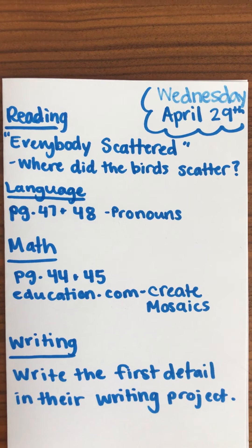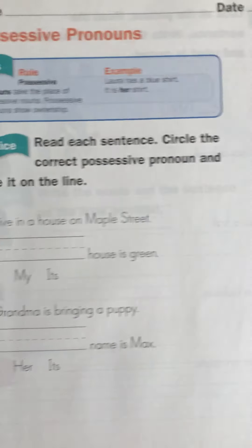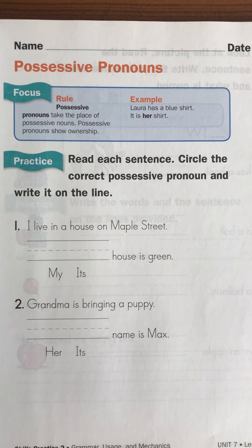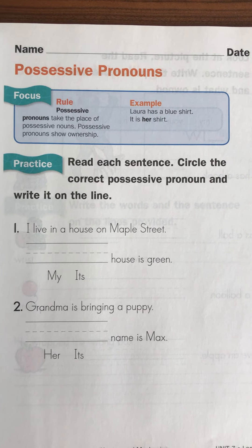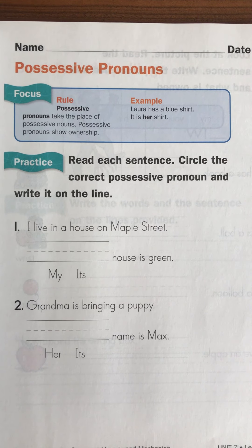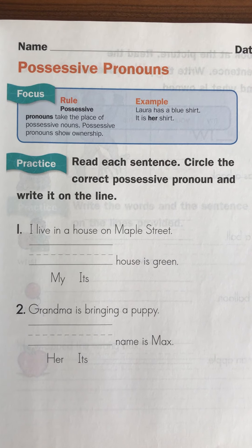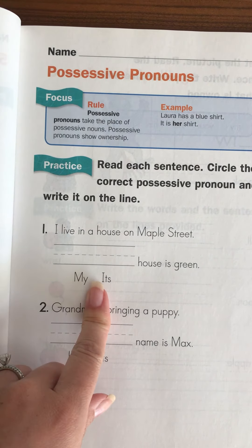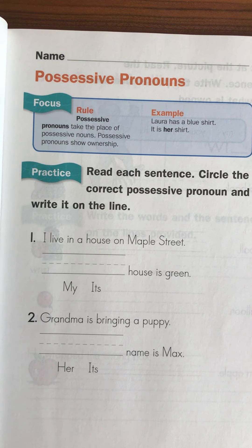In language today we're doing pages 47 and 48 and we are working on pronouns again, but not just any pronoun — possessive pronouns. This is a big word and it's one that your child probably has not heard yet in class. Possessive means you own something; it's the ownership of something. So it's replacing that word that belongs to somebody but also it's about the ownership of something.